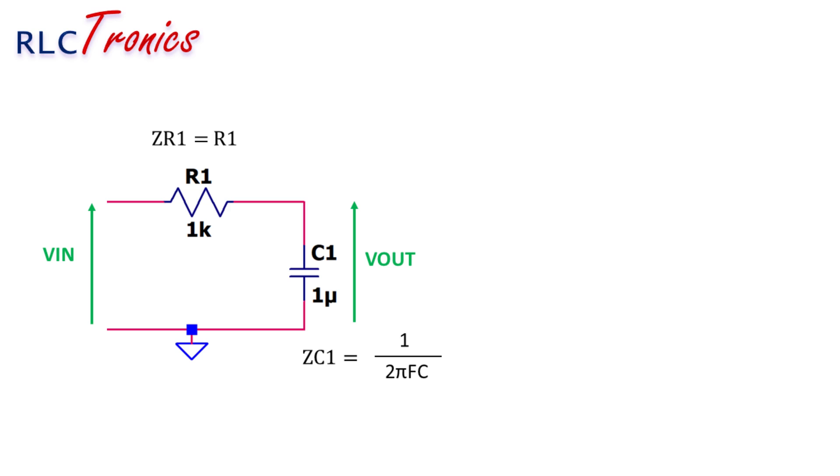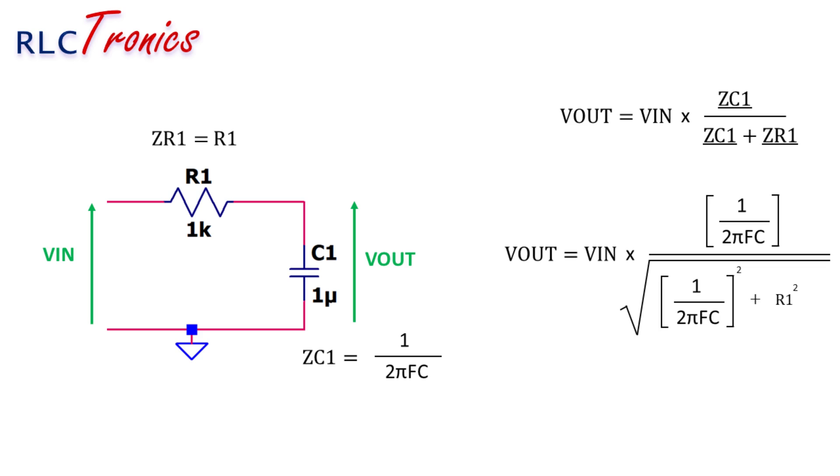In this case, the output voltage will decrease when the frequency increases, and this is how the circuit is filtering the high frequency signals.